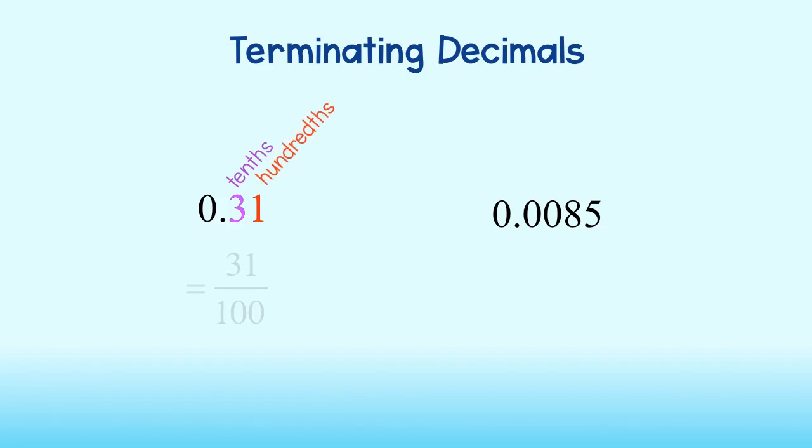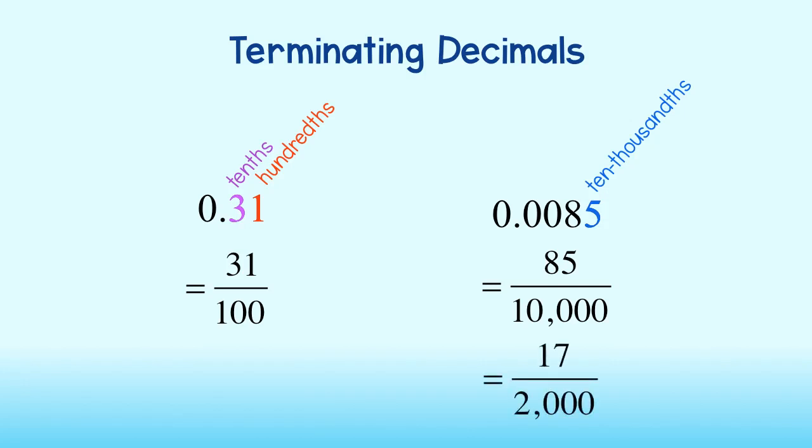We can write this number as 31 hundredths. Let's take a look at the next number. This particular number reaches the ten thousandths place value. We can write this number as 85 ten thousandths. We can write this fraction in simplest form by reducing it to 17 two thousandths.